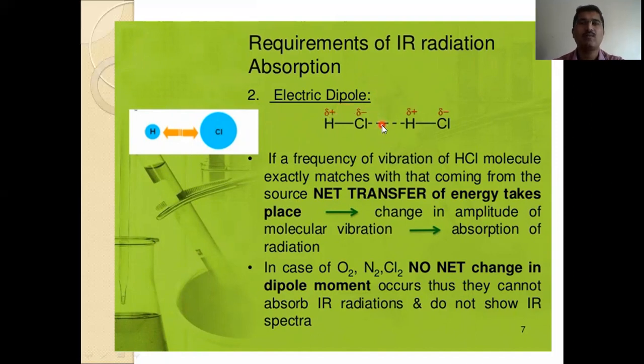Requirement of IR radiation absorption is electric dipole. Electric dipoles are shown in polar molecules. Here, HCl is a polar molecule. We can see here, hydrogen shows partially positive charge, chlorine shows partial negative charge. And in between two molecules, intermolecular interactions are also present here. If frequency of the vibration of HCl molecules exactly match with that coming from the source, net transfer of energy takes place. Changes in the amplitude of the molecular vibration absorb the radiation.